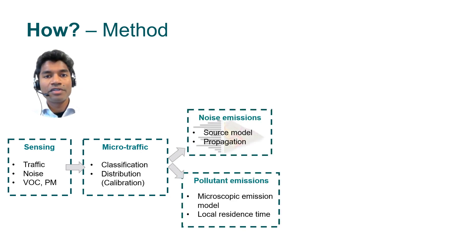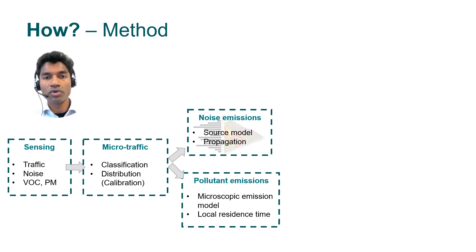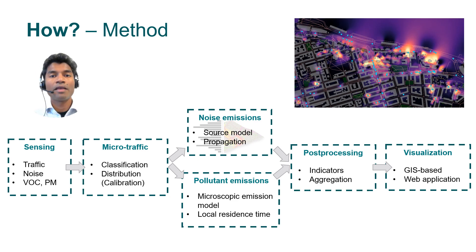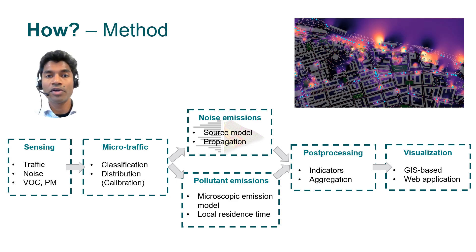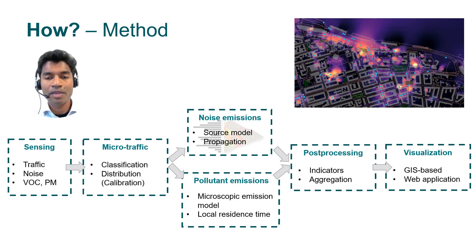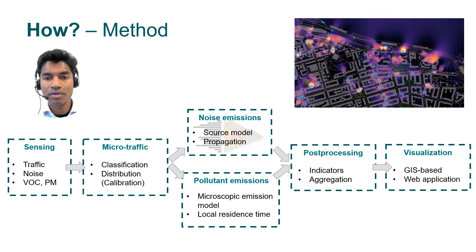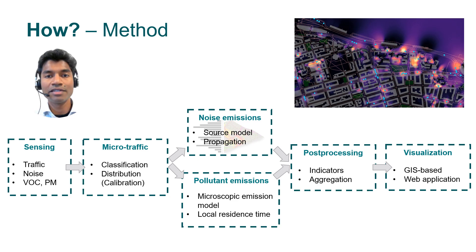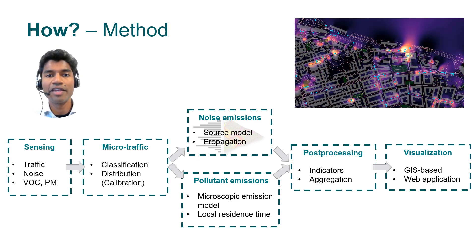These microtraffic simulations can then be used for emission modeling. One kind of modeling will be for noise, which will include a source and a propagation model. There are also emission models for pollutants themselves, like air pollutants. Finally, the outcome of these simulations allows for post-processing to evaluate relevant metrics and also visualizing them. An example of such a visualization is shown in the video, depicting noise exceedance or noise exposure from vehicles on a road network.